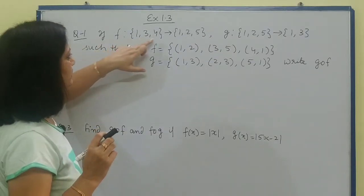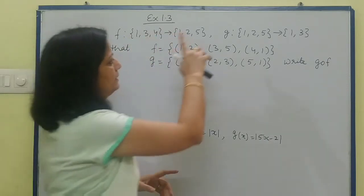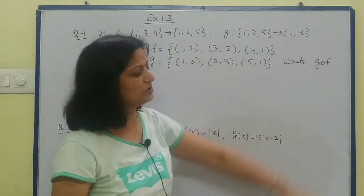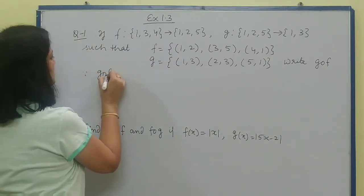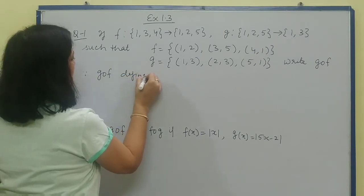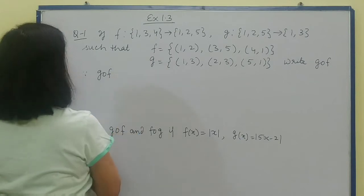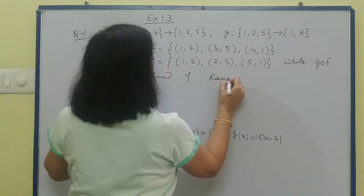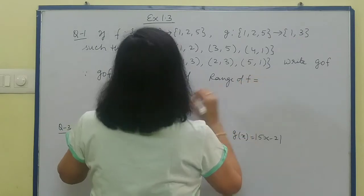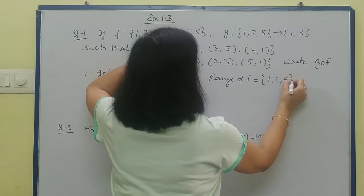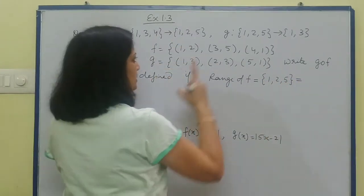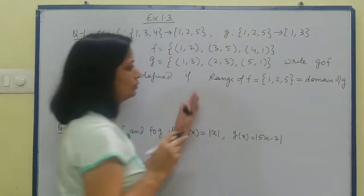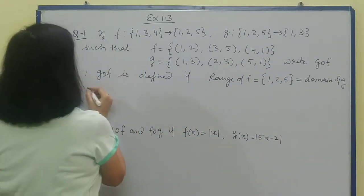Let's see the questions. If f from {1,3,4} to {1,2,5} and g from {1,2,5} to {1,3}, and both f and g are given, we need to find g composite f. First we'll write: g composite f is defined when range of f, which is {1,2,5}, equals the domain of g, and domain of g is also the same set. Both are equal, so this is defined.